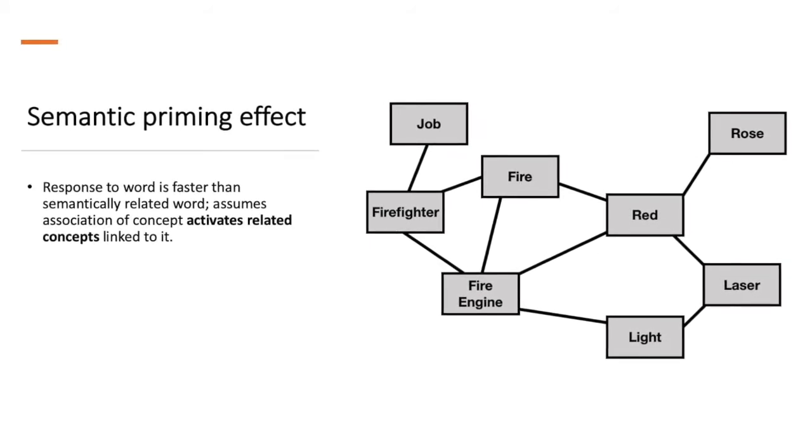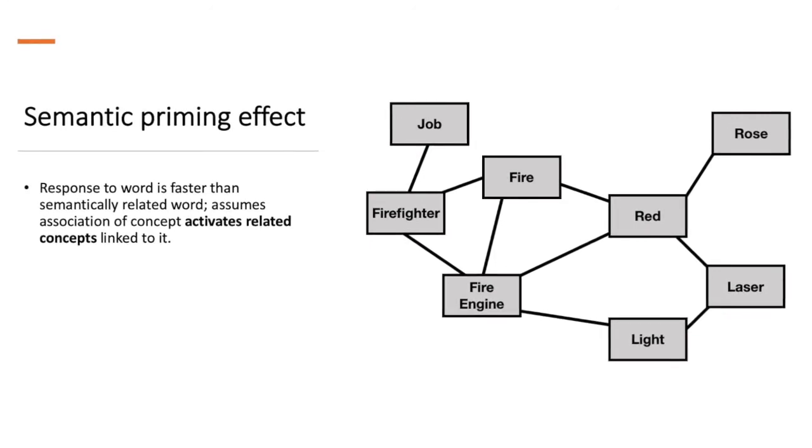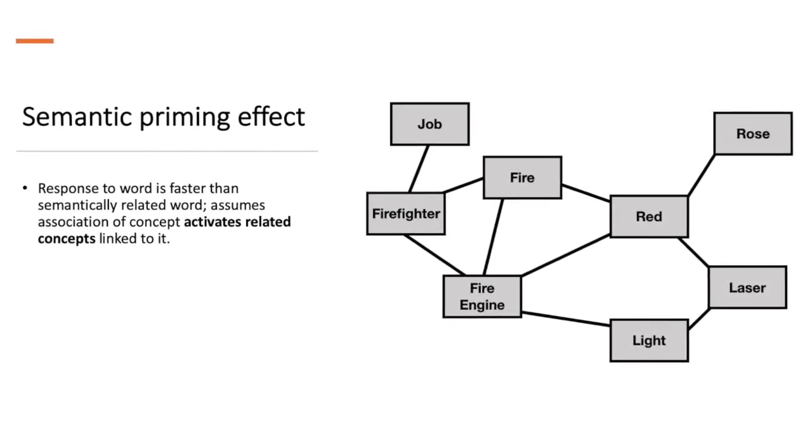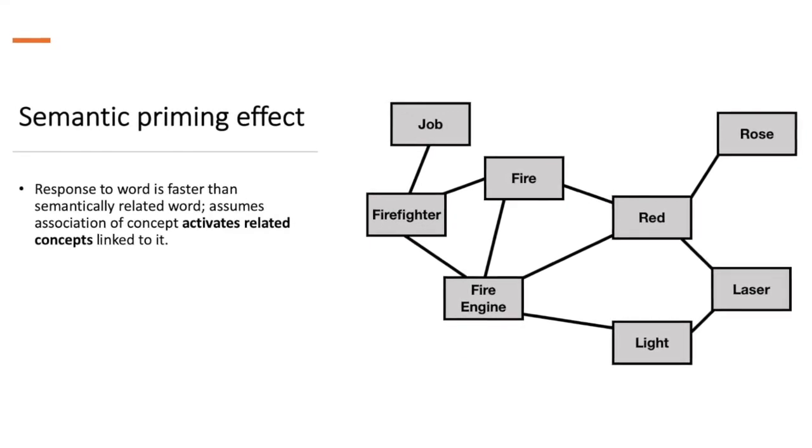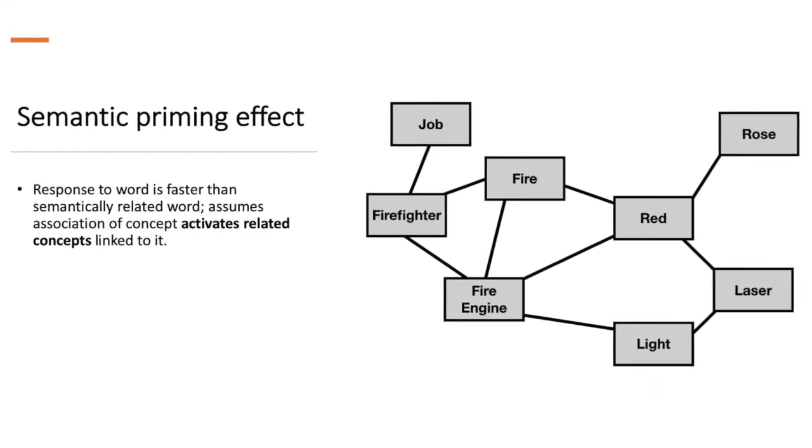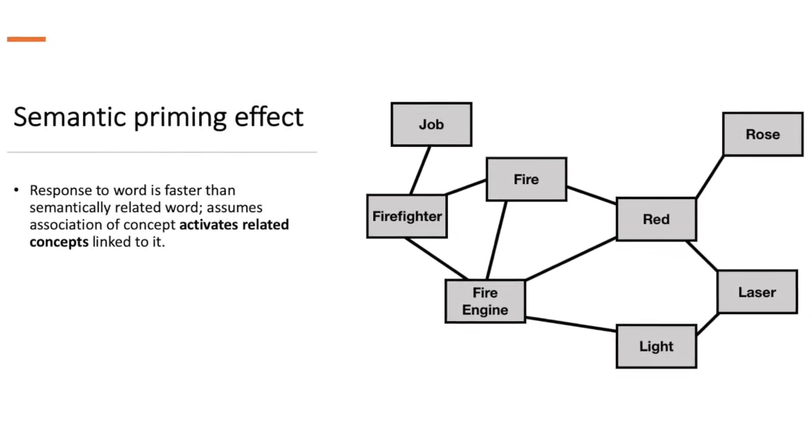For example, in the model we began with red, and then it was linked to other stuff like roses, lasers, fire. And basically, these things are also linked to other things, and so the links just keep linking with other stuff.